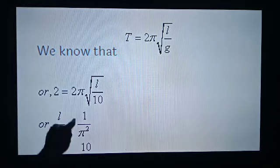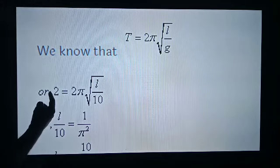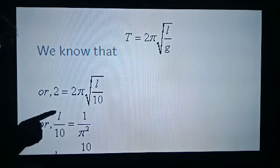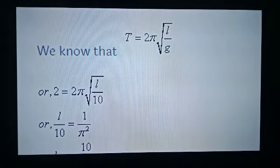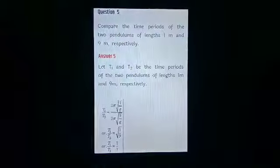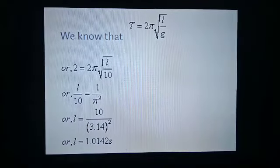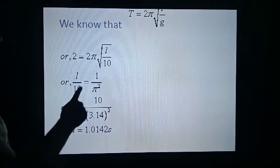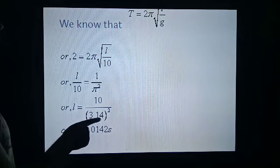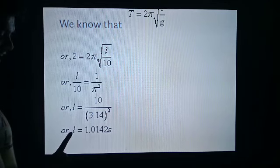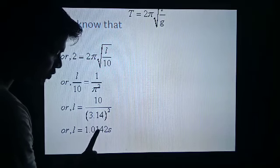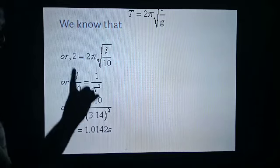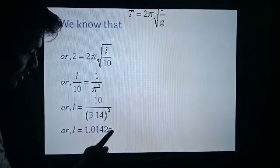Squaring both sides, the 2s cancel, giving L by 10 equals 1 upon π squared. So L is equal to 10 divided by π squared, where π is 3.14. On solving, L is equal to approximately 1.014 metres, which is approximately 1 metre. So the length of the second pendulum at a place where acceleration due to gravity is 10 m/s² is approximately 1 metre.